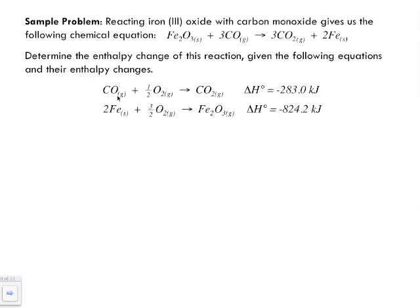We've been given some reactions. We've got carbon monoxide gas plus a half mole of oxygen gas to form one mole of carbon dioxide — it's exothermic and gives off a certain amount of heat. If we combine iron with oxygen, it forms iron(III) oxide. And here we have our target equation.